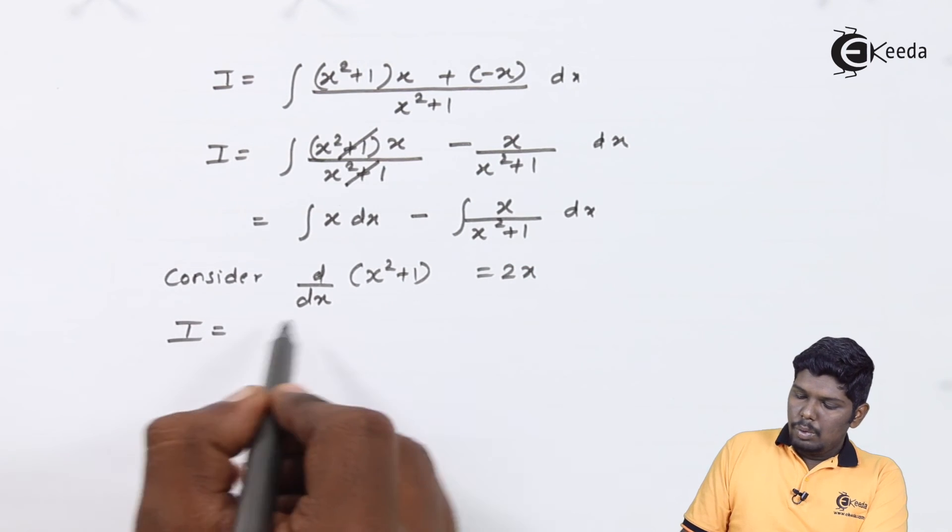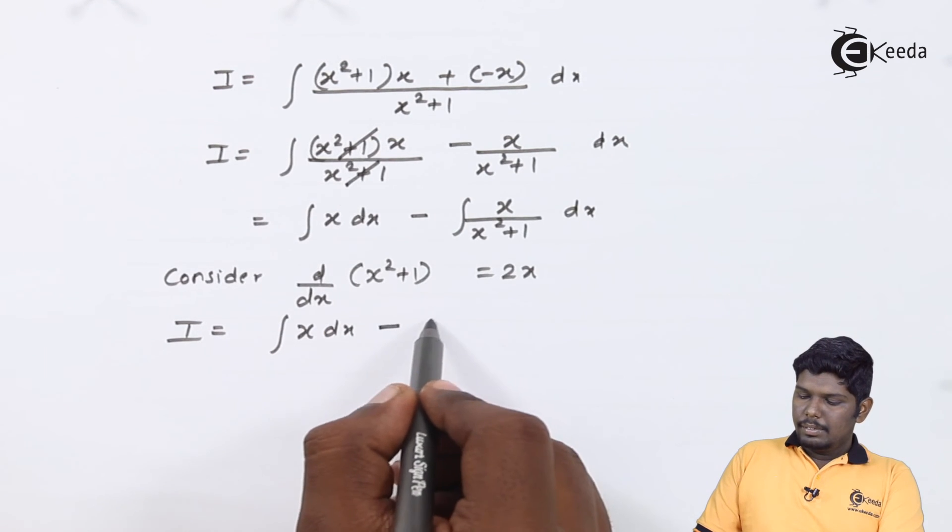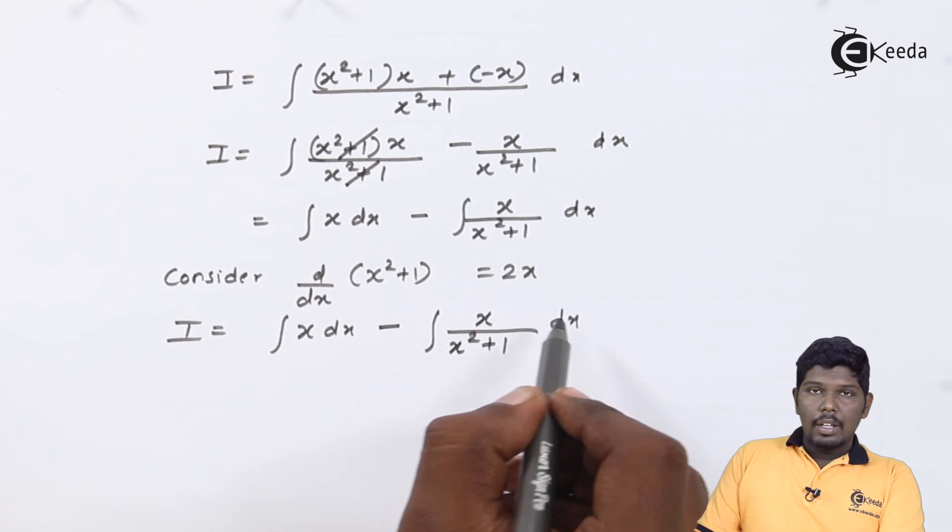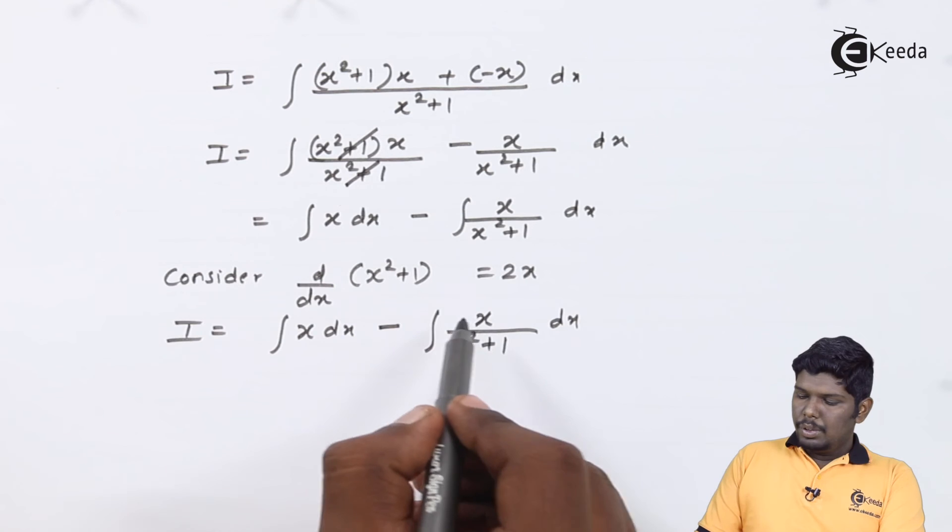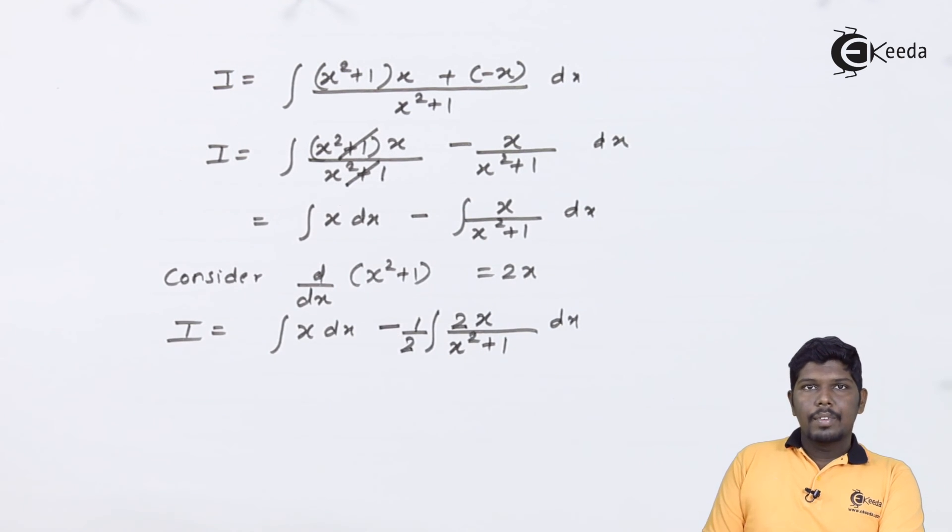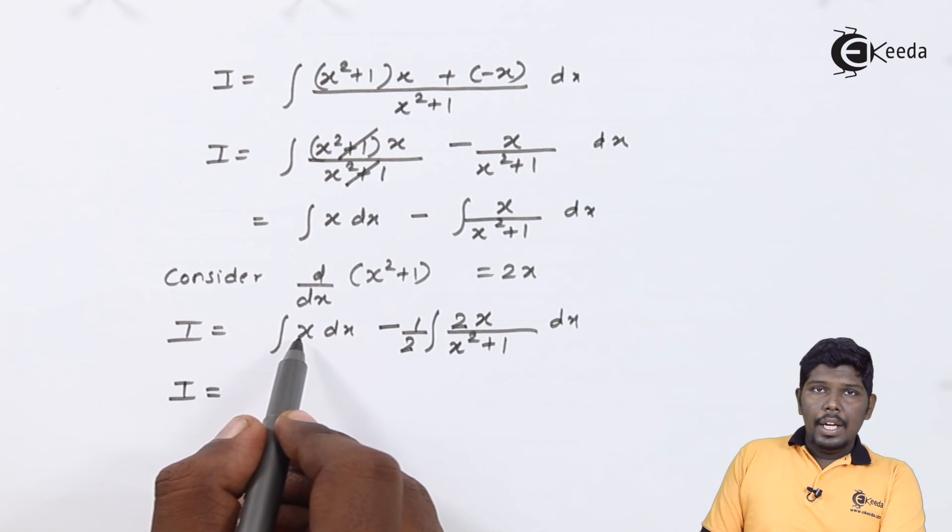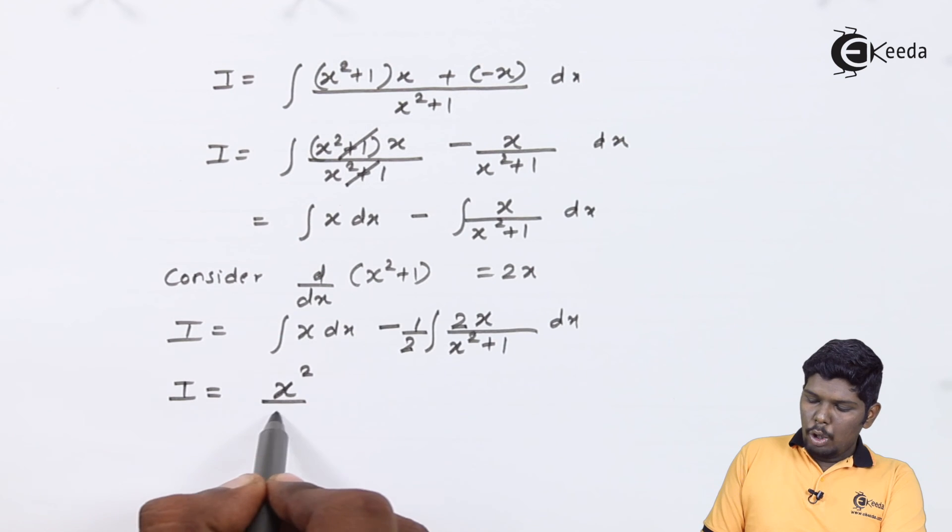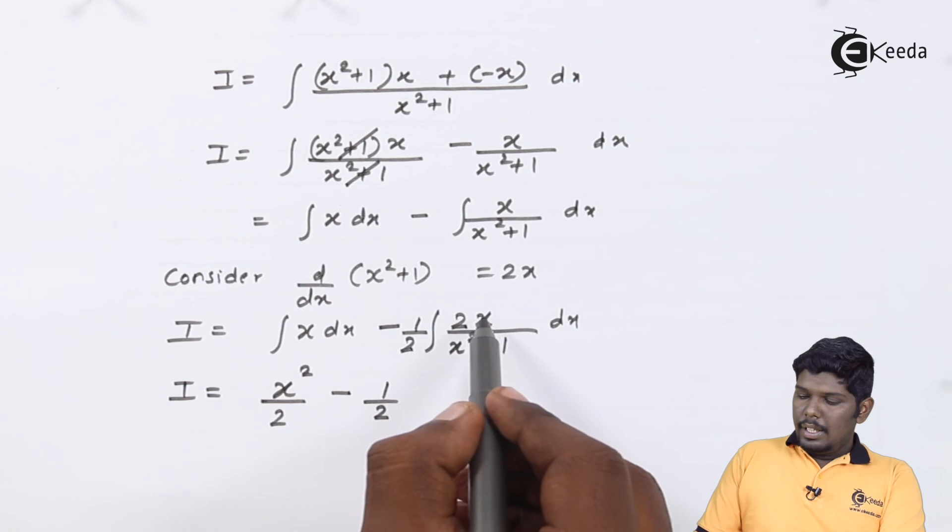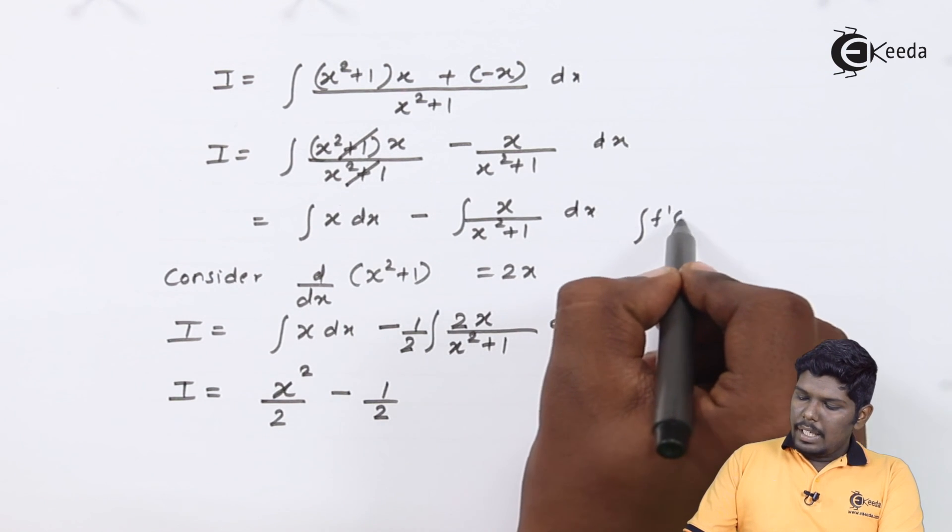That will give you I equals integral x dx minus x/(x²+1) dx. Here we need to adjust 2, therefore multiplying 2 and at the same time dividing it by 2. This will give you I equals integration of x will be x²/2 minus 1/2. This is in the form of f'(x)/f(x) and integration of f'(x)/f(x) will give you log f(x).